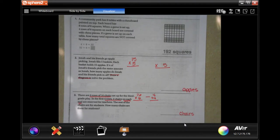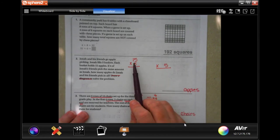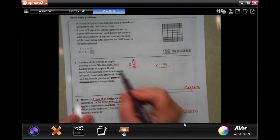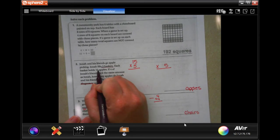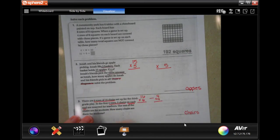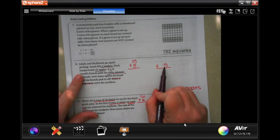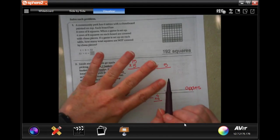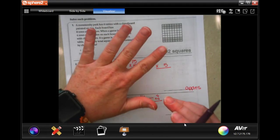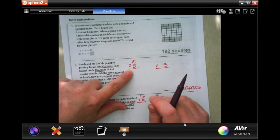This one, number two, says Jonah and his friends go apple picking. Jonah fills five baskets. Each basket holds 15 apples. Four of his friends pick the same amount. So five baskets of 15 apples. Four of his friends pick the same amount. That means that Jonah and his four friends all pick the same amount. They all pick this amount.